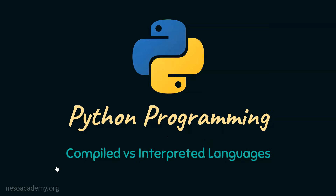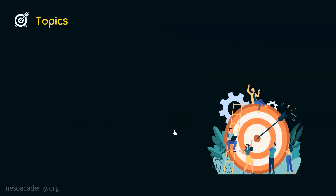In the last presentations, we saw what is a compiler and what is an interpreter. Now we are ready to understand the differences between compiled and interpreted languages. Without any further delay, let's get started and see all the topics of this presentation one by one. There are only three topics we need to cover in this presentation.